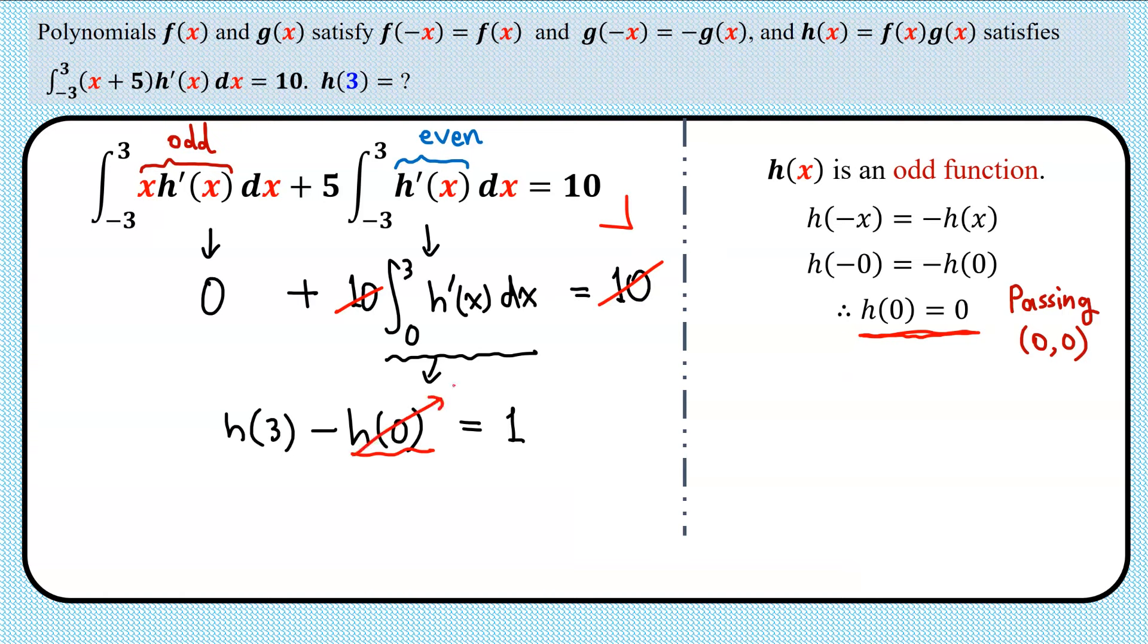So since this is 0, we know that h(3) equals 1. Therefore, the correct choice is 1.